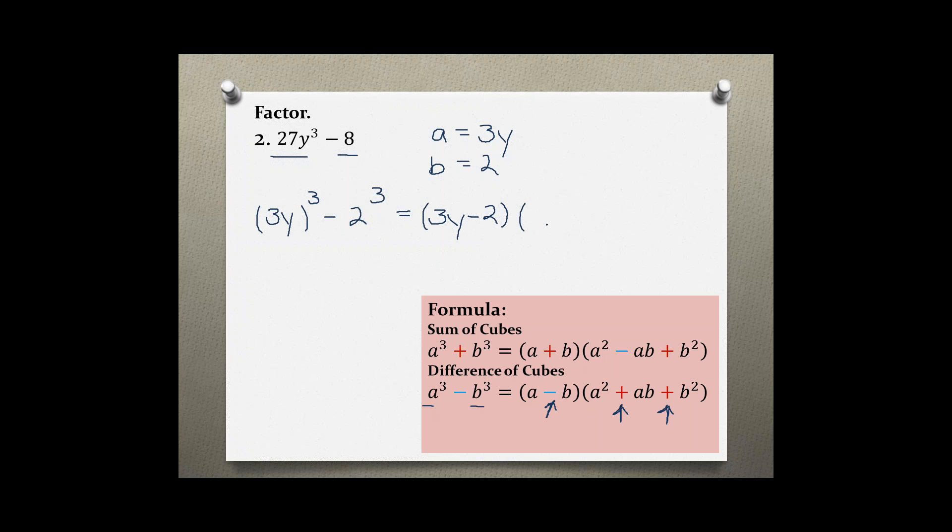And then a², so (3y)²—3 times 3 is 9y²—plus ab, which is 3y times 2, so 6y, and plus b², so 4.